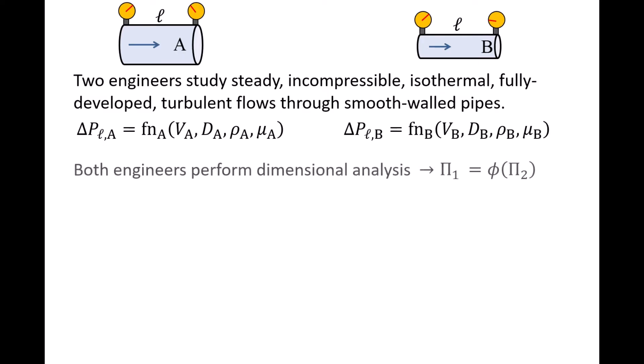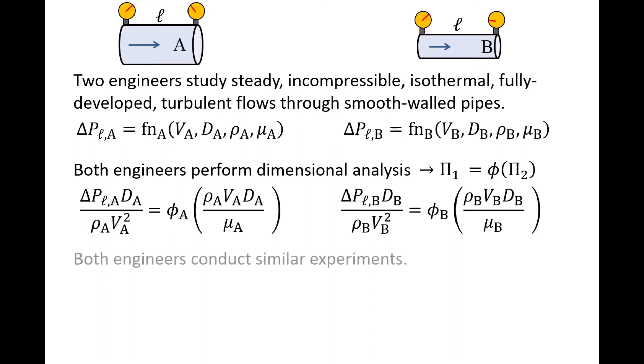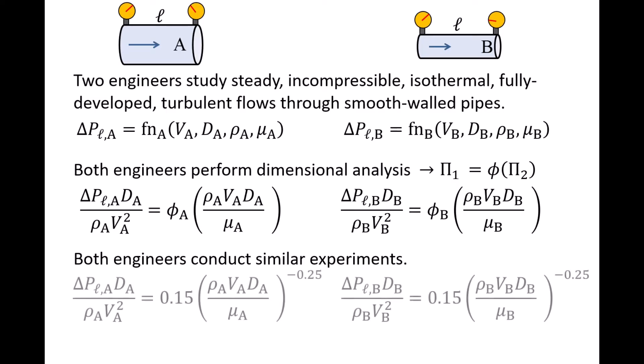Both engineers perform dimensional analysis and realize that two pi groups are required to study this system experimentally, and find that a valid set of pi groups are delta PL times d over rho V squared, and the Reynolds number rho Vd over mu. To find the relationship phi, both engineers conduct experiments where they vary the Reynolds number of the flow and find that phi is 0.15 times the Reynolds number to the negative 0.25 power.